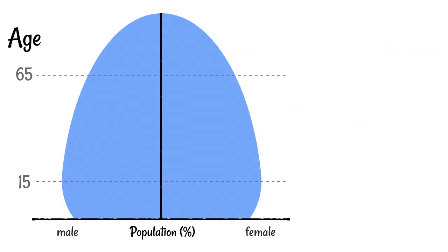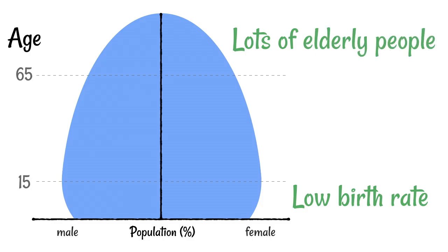In this society, there's a very low birth rate and quite a large proportion of people living to be a lot older. We can assume there is good access to medical care, good access to contraception, and good education about birth control. This society is probably quite well developed — likely a more economically developed country. In societies like this, there are probably more women in the workplace, which is also a reason for the lower birth rate.